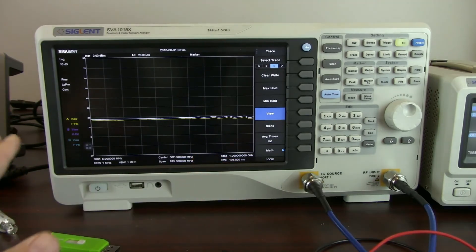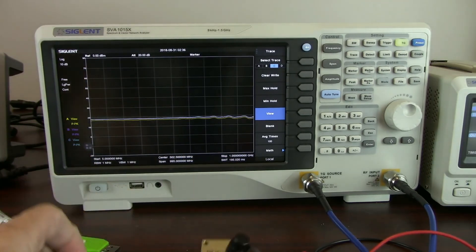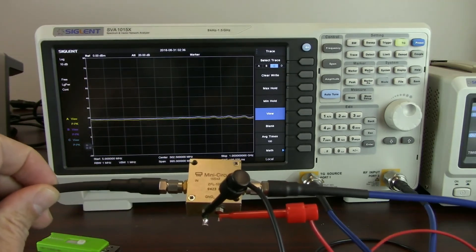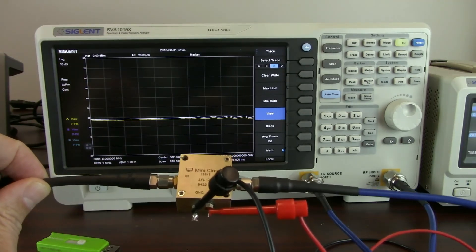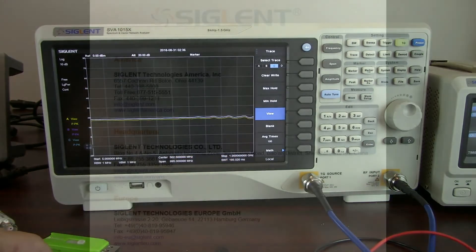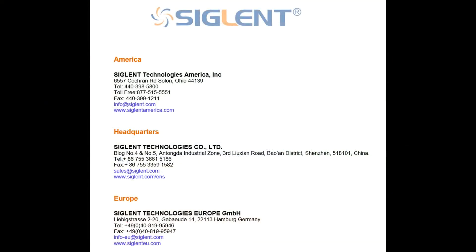So we can use this tool, the spectrum analyzer with the tracking generator, to check out the performance or the gain performance of our amplifier very easily. I'd like to thank you very much for watching the video today. If you have any questions, please contact your local Siglin office. Thank you, and have a great day.